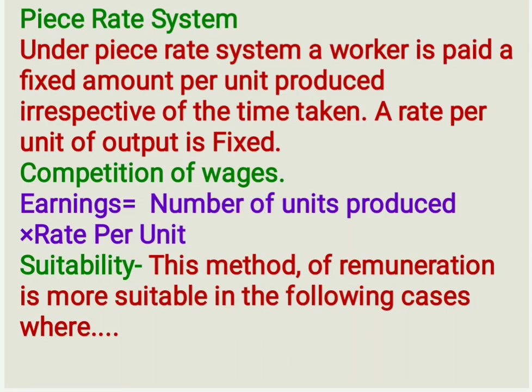This method of remuneration is more suitable in the following cases: First, quantity of output is the main factor and quality is not important. Second, work can be measured in convenient units. Third, job rate can be easily fixed. Fourth, there is continuous work. Fifth, supervision is not possible and supervisor cannot devote enough attention to individual performance. Six, competitive condition and cost control requires that labor cost per unit should be definite. Seven, single process is involved.